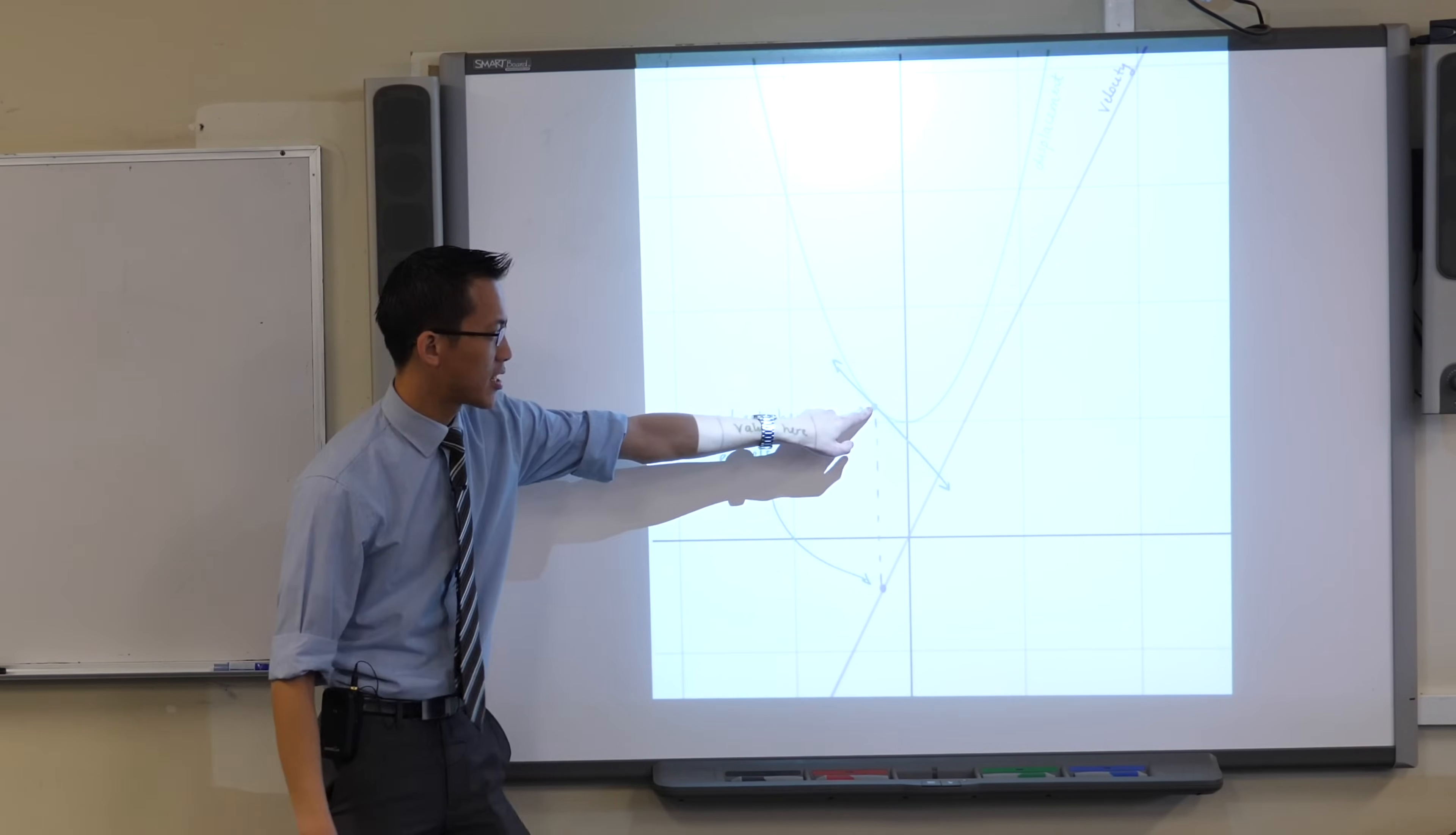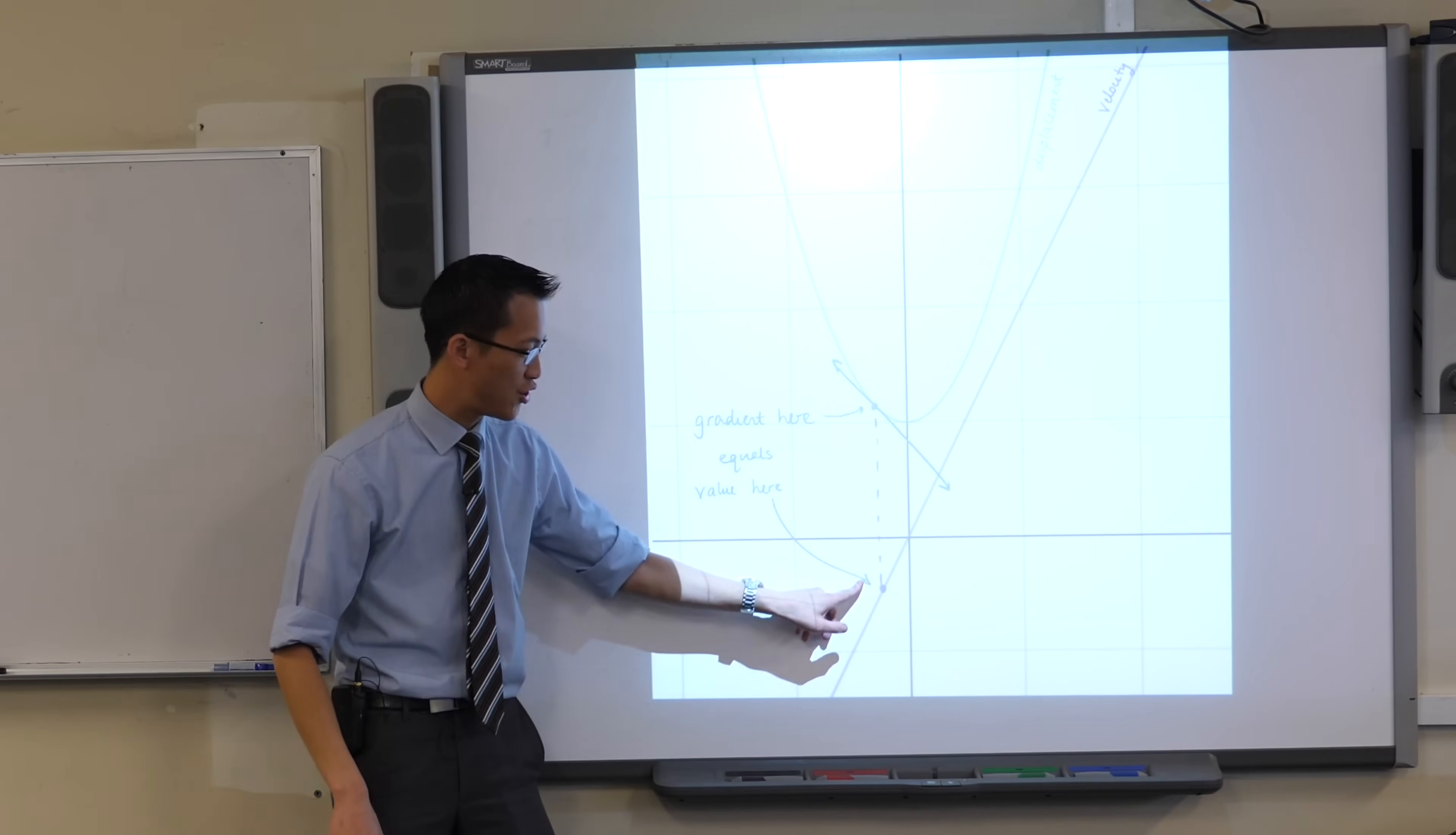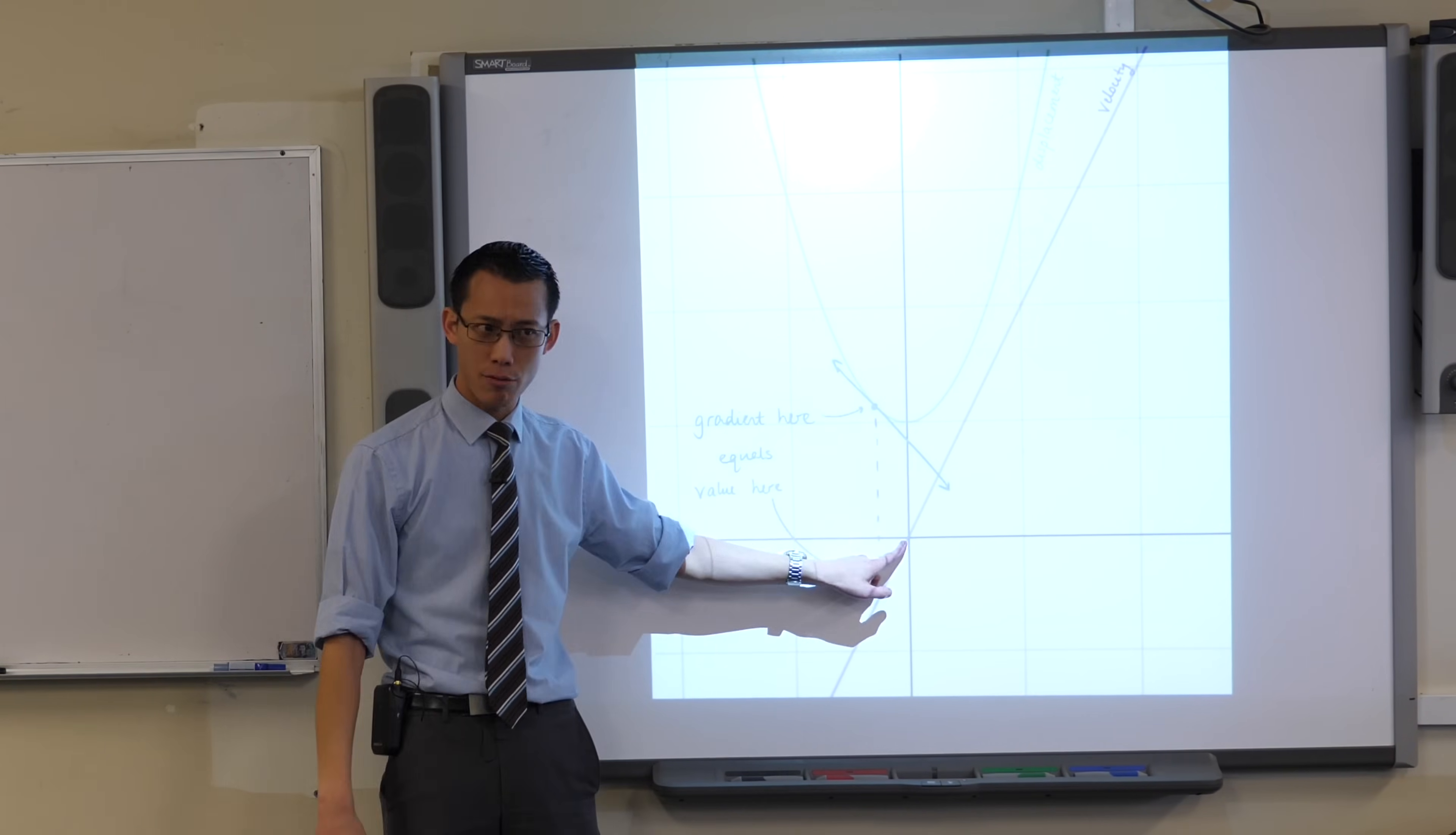So for instance see this component here, this particular tangent I've drawn, it's going in the decreasing direction which is why down here the velocity graph is negative. And look what happens as the velocity graph approaches zero, what's the displacement graph doing? Well it's slowing down because velocity is going towards zero. So there is a stationary point there because velocity is zero.